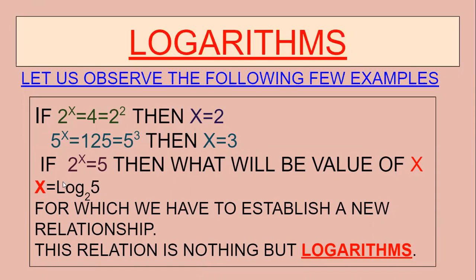Now let us see this one: 2 to the power of x is equal to 5. So 5 cannot be written in a square form or in a cubical form. So how will we find out the x value here? We have to make a new relationship between this 5 and x, and that new relationship is nothing but logarithms.